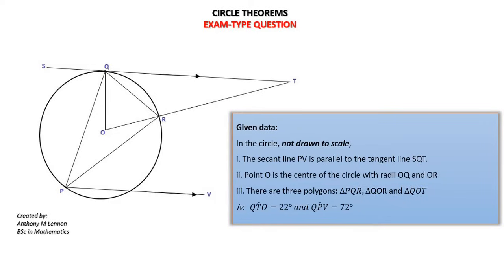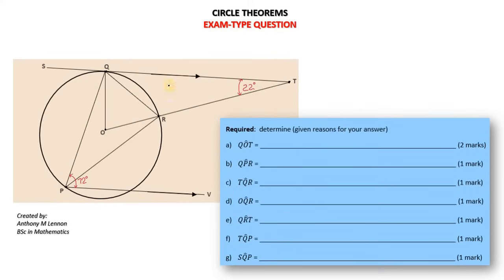Hello there. We're looking at circle theorems and we have an exam type question that we want to solve. QTO is given as 22 degrees, QPV is given as 72 degrees. What is angle QOT? Angle QOT is this angle right here that we're trying to determine.